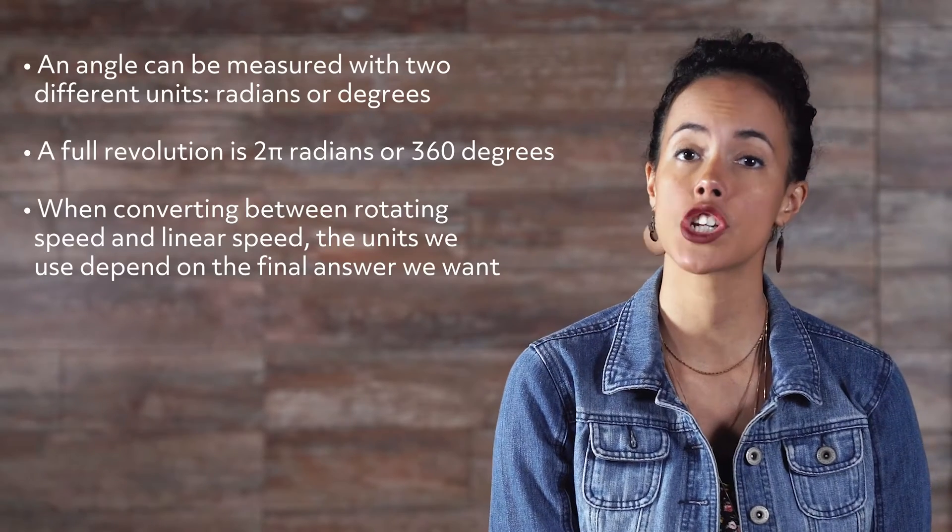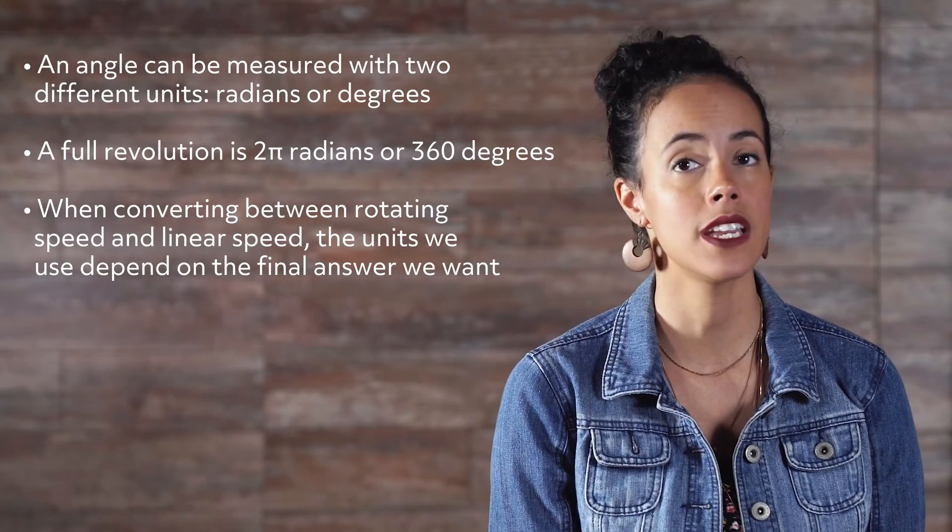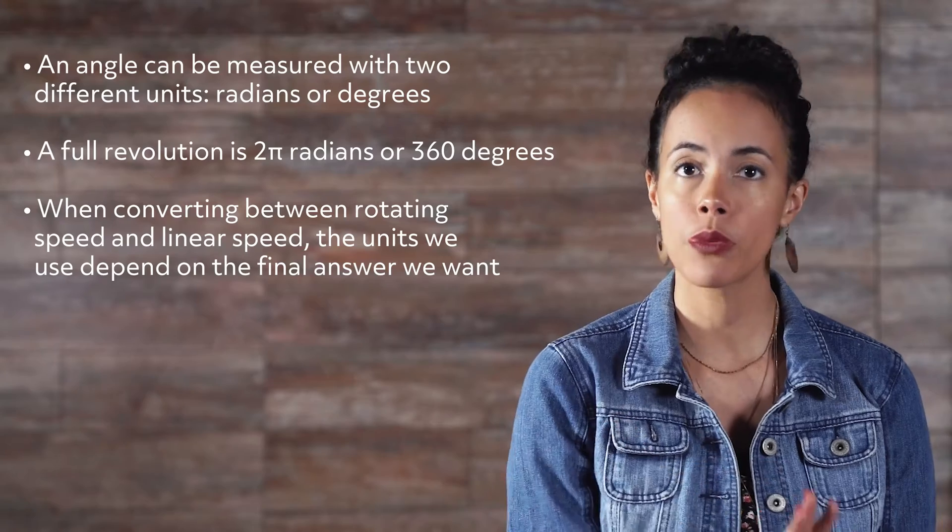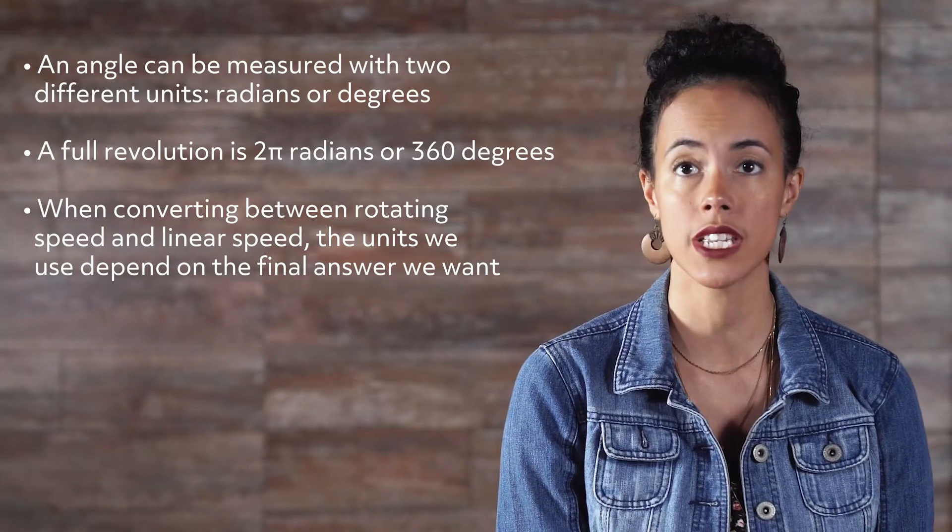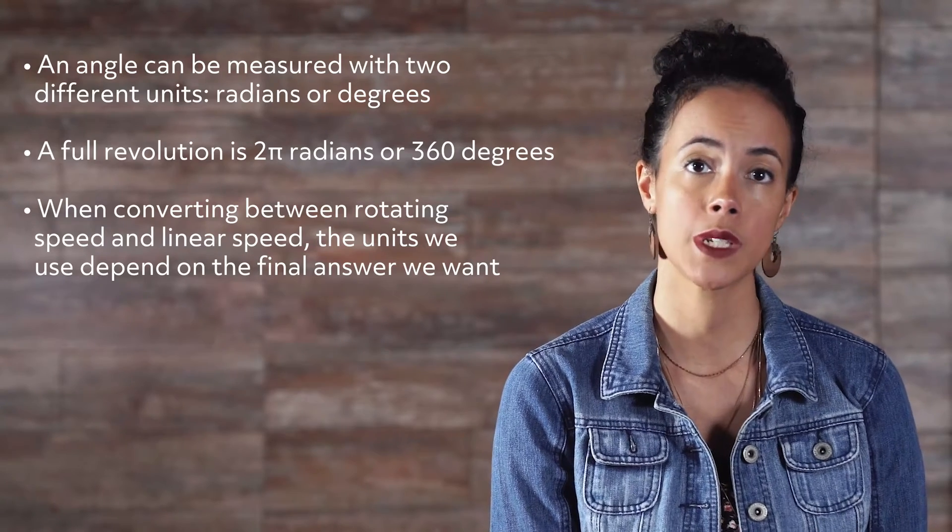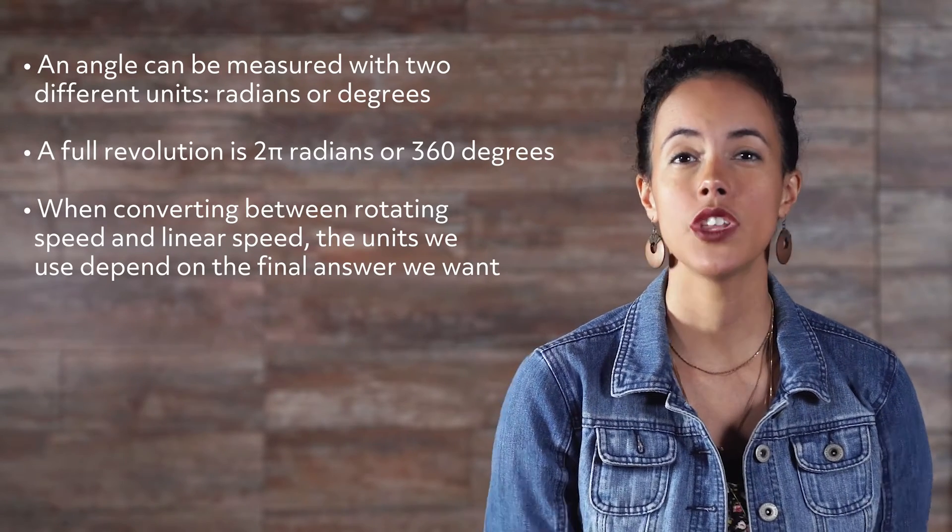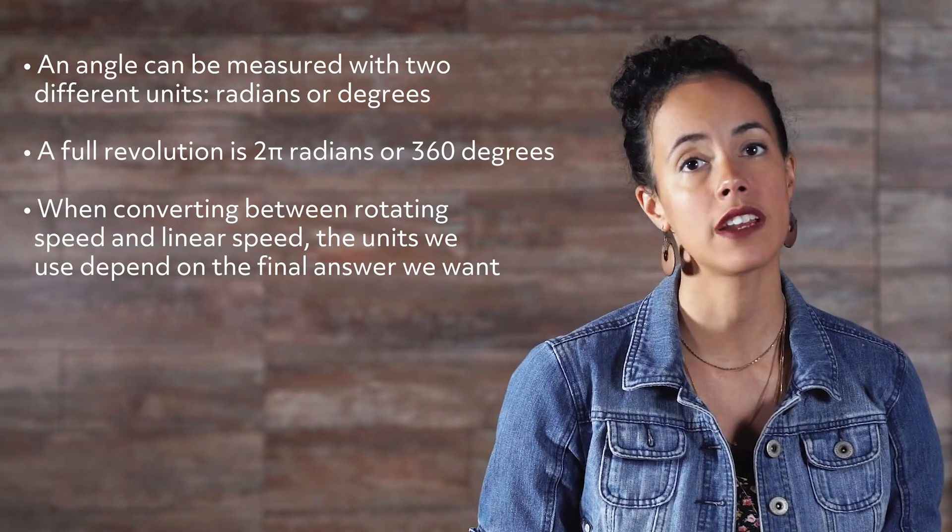Recall an angle can be measured with two different units, radians or degrees. A full revolution is 2 pi radians, or 360 degrees. When converting between rotating speed and linear speed, the units we use depend on the final answer we want. Let's use radians first.